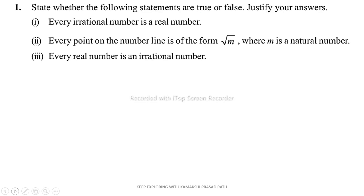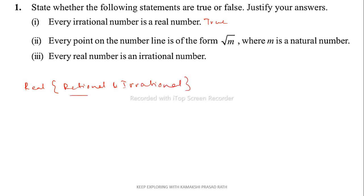The first question says: state whether the following statements are true or false and justify your answers. The first part: every irrational number is a real number. The statement will be true, because a set of real numbers consists of all the rational and irrational numbers together — they are called real numbers.